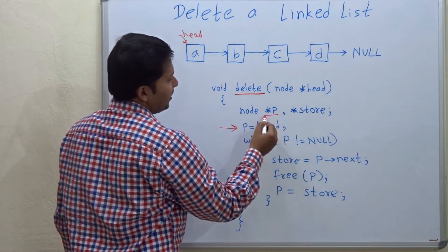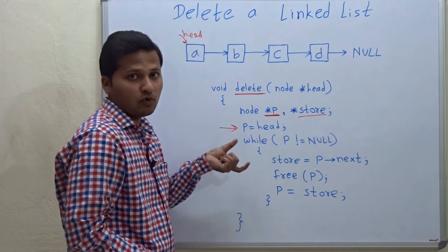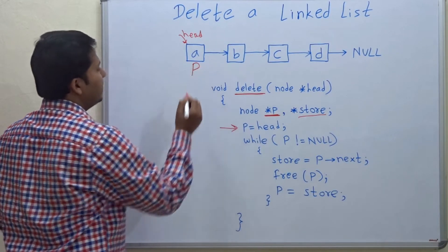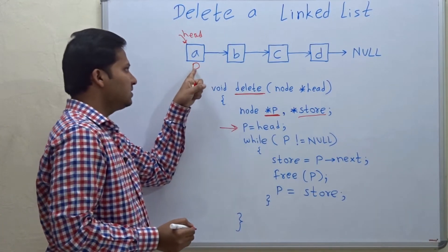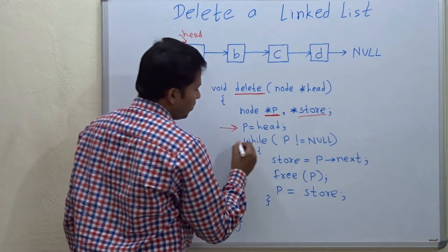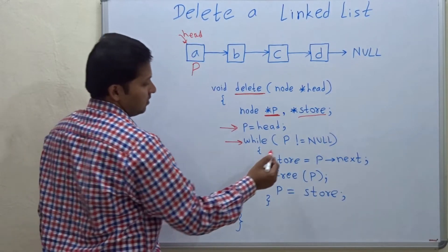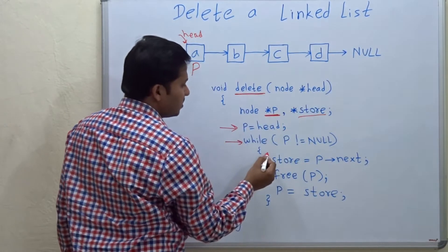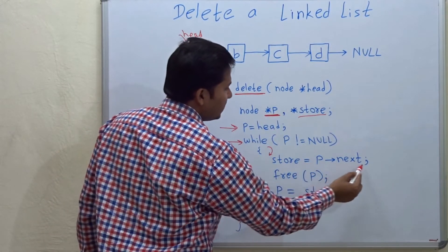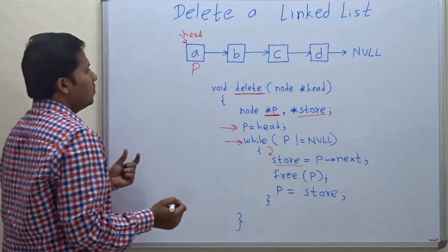Pointers p and store are declared to hold some addresses further in the program. p is equal to head, meaning p will point to head at first, and after that we will trace the whole linked list using pointer p. Now let's go into the while loop to trace the linked list. While p is not equal to null, this loop will keep executing. Inside the loop, store is assigned p's next.